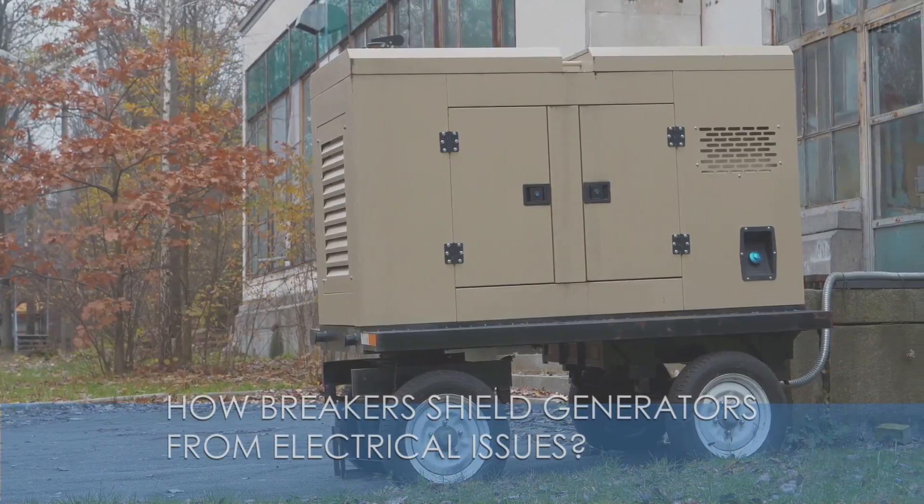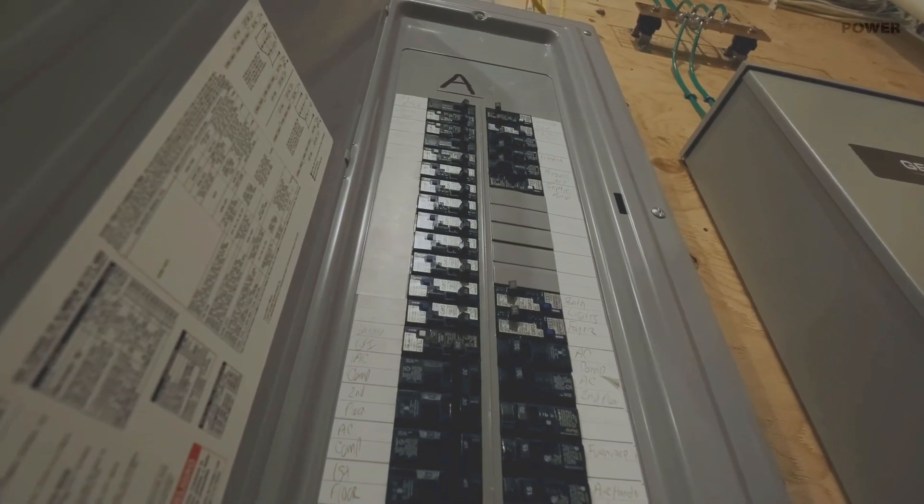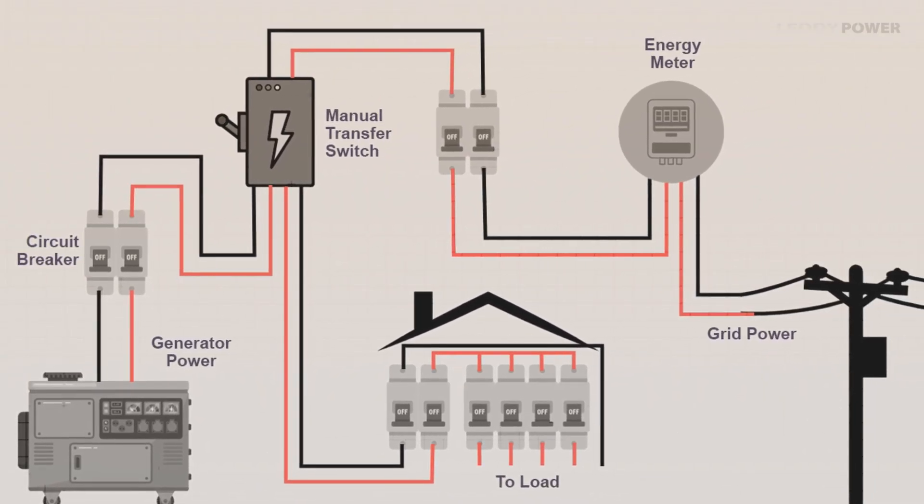How breakers shield generators from electrical issues. Circuit breaker is an important safety component. By disconnecting the circuit in the event of an electrical anomaly, it protects the generator.